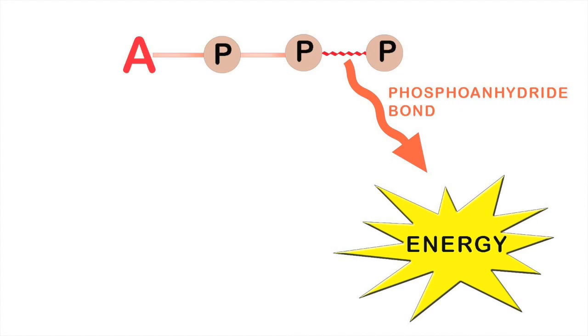It must be noted that the phospho-anhydride bond is also called a high energy bond because it yields high energy, but it's a weak bond due to instability of the molecule.